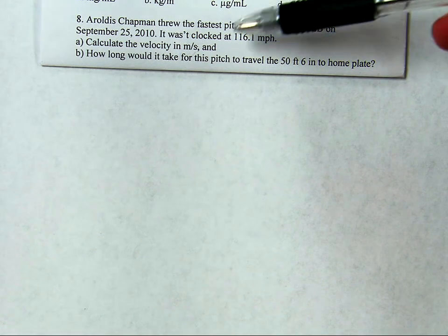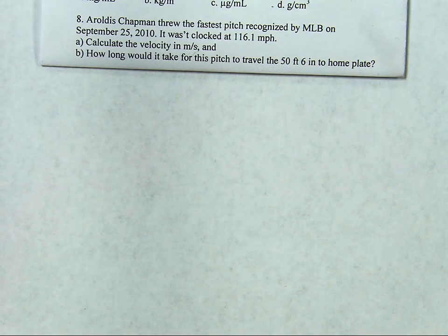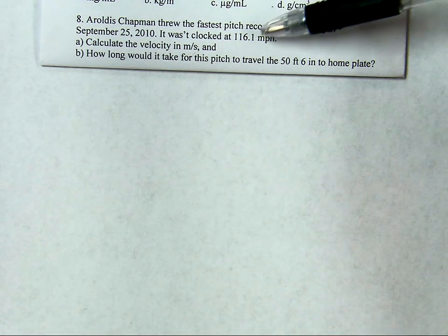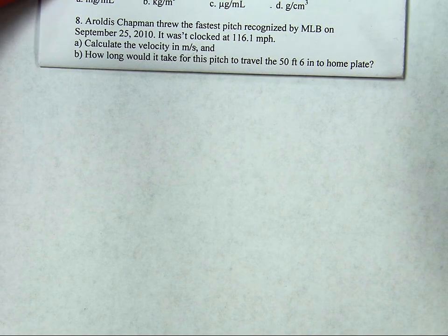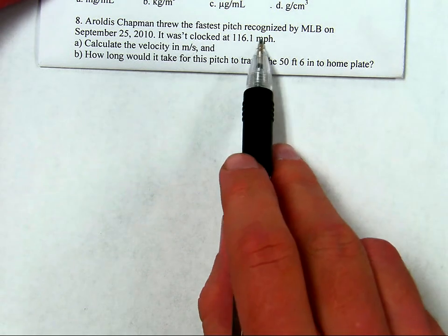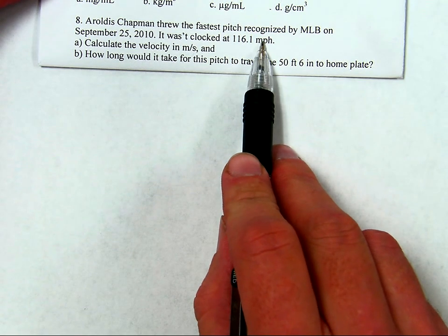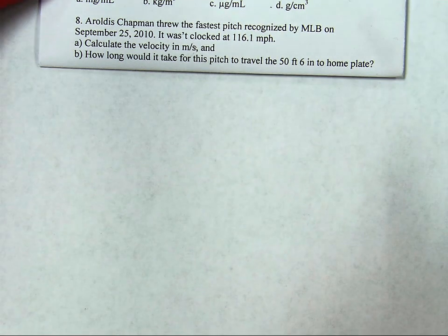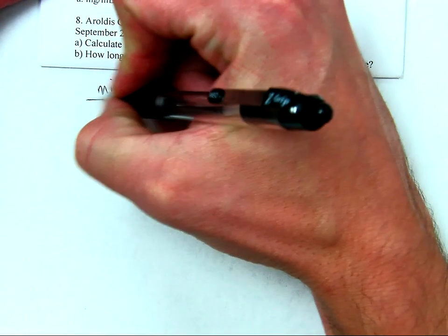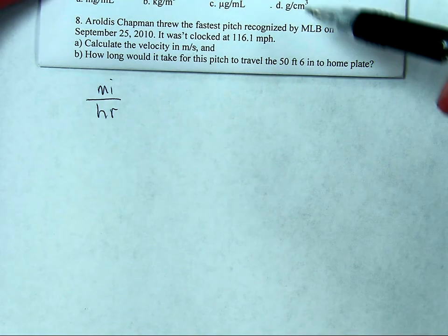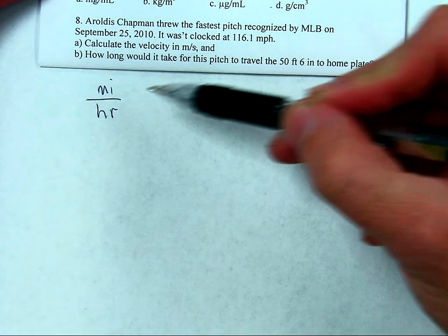Let's look at that first half: calculate the velocity in meters per second for this fastball thrown at 116.1 miles per hour. If we're going to do that, we need to think about getting from miles per hour to meters per second. So, 116.1 miles per hour — that's another way to write this same set of units.